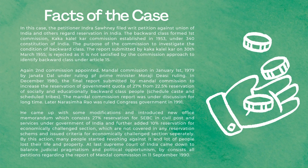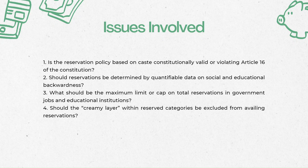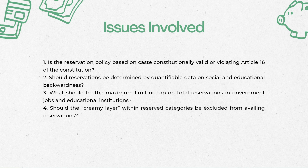अभी हम issues के बारे में समझ लेते हैं। यहाँ पे mainly चार issues थे। First: is the reservation policy based on caste constitutionally valid, or does it violate Article 16 of the Constitution? Second: should reservations be determined by quantifiable data on social and educational backwardness only? Third: what should be the maximum limit or cap on total reservations in government jobs and educational institutions? Fourth: should the creamy layer within the reserved categories be excluded from availing reservations? These four issues were placed before the 9-judge bench of the apex court.